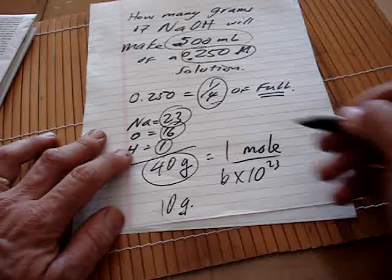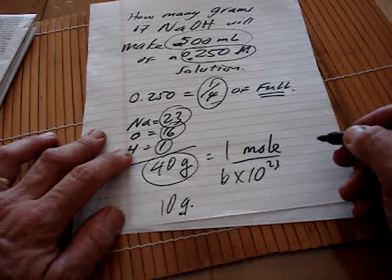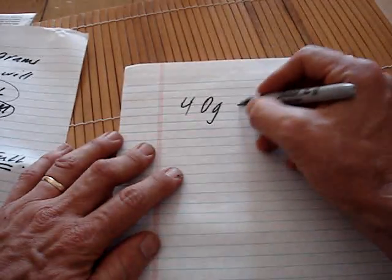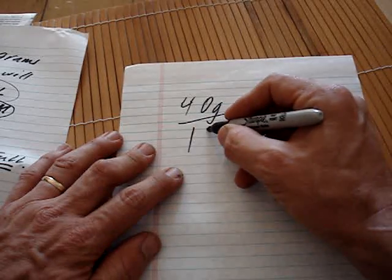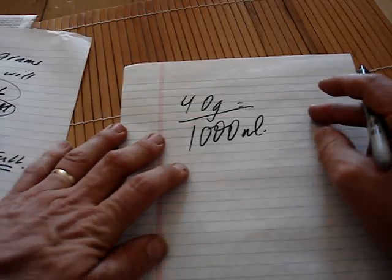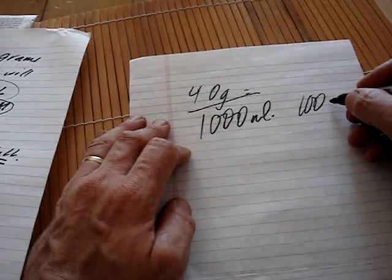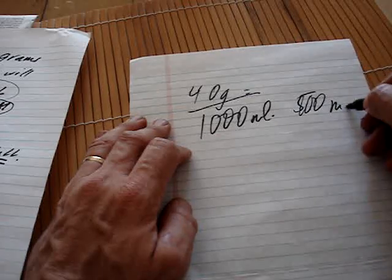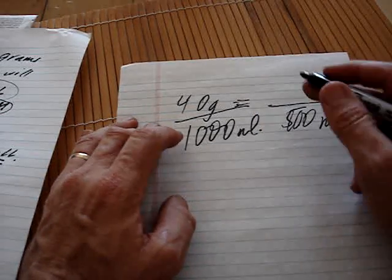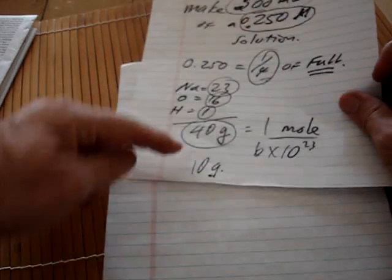And we know that we usually put this amount, the 40 grams, into one liter. So instead of being 40 grams in 1000 milliliters, we need the same amount though but in only 500 milliliters.